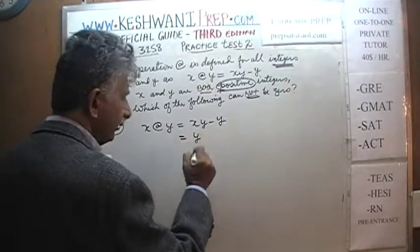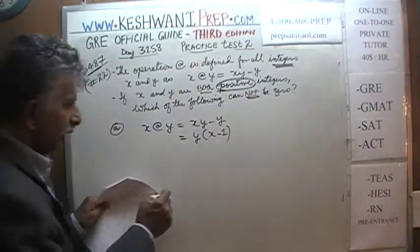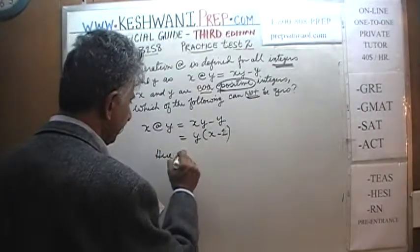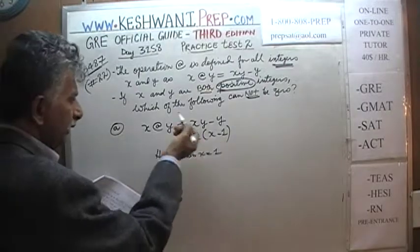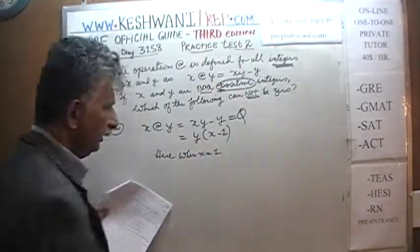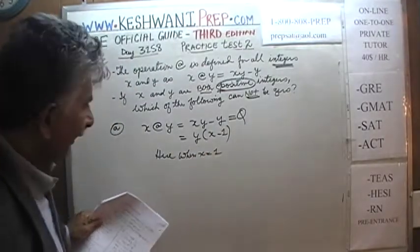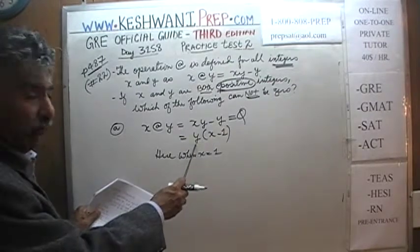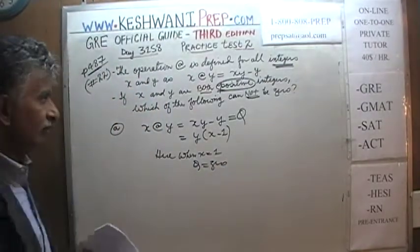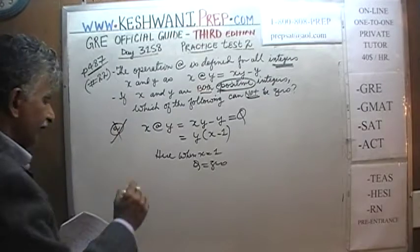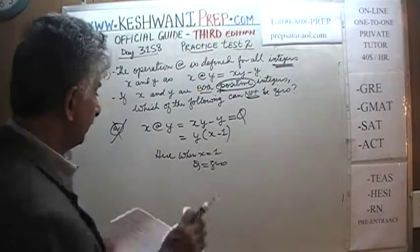Answer choice A is x operation y, which is x times y minus y. If we take out y as a common factor, we are left with y times (x minus 1). We can clearly see that when x equals 1, this whole quantity becomes 0 — it doesn't matter what y is. When x equals 1, (1 minus 1) is 0. So A tells us the quantity can become 0, which means A is not the answer.